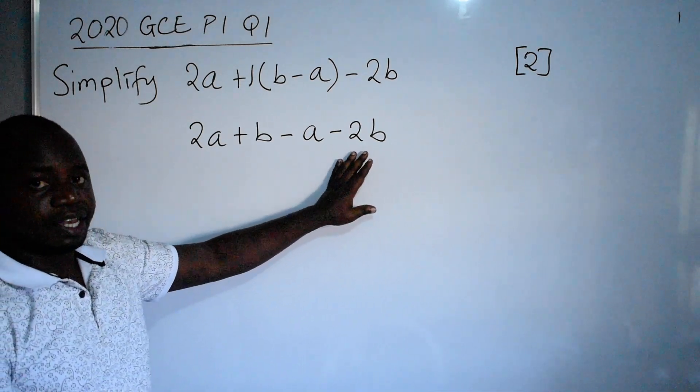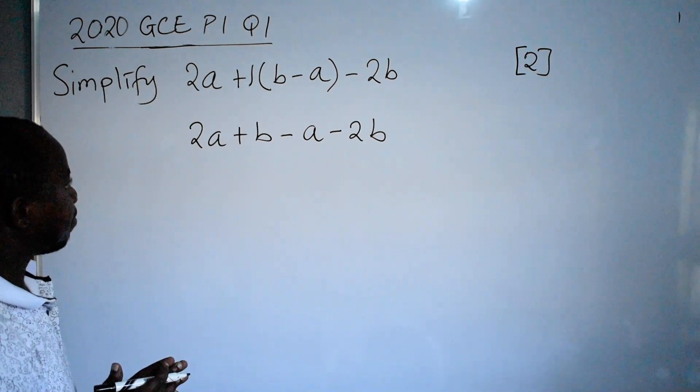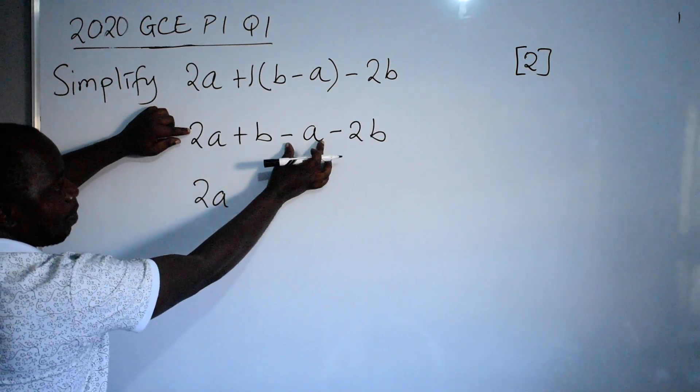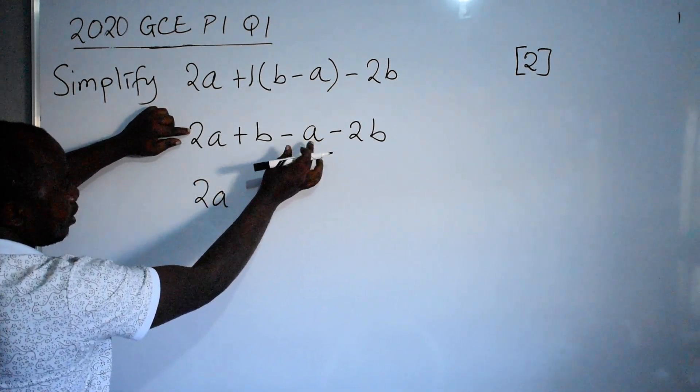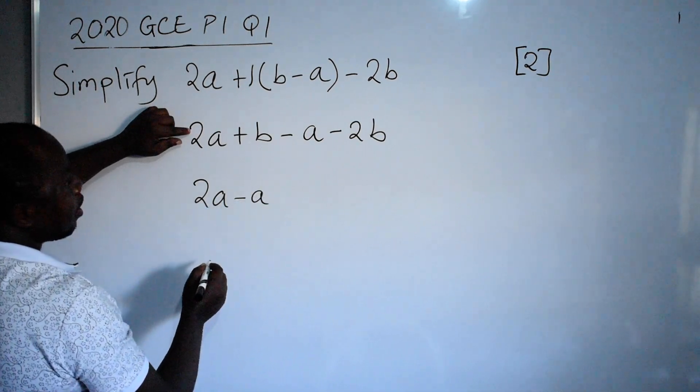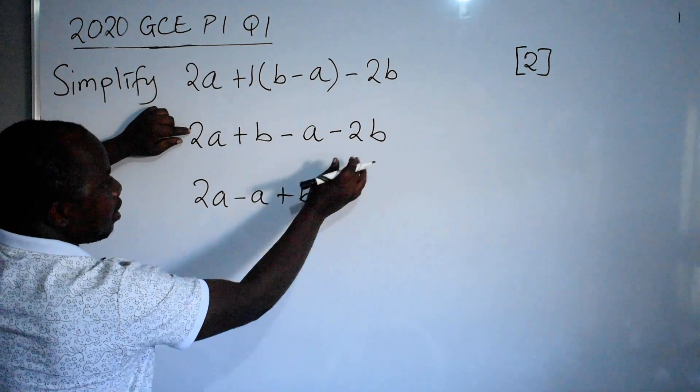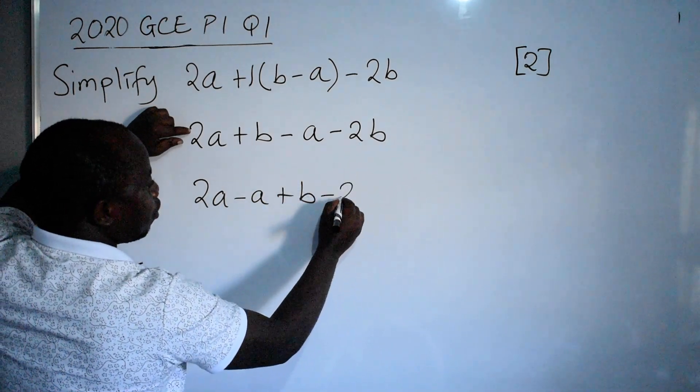This stage here is about collection of like terms. I am going to say 2a. Where is the pair? The pair is here. So you get this, negative a. Then we have plus b. Plus b. The pair is here. Minus 2b.